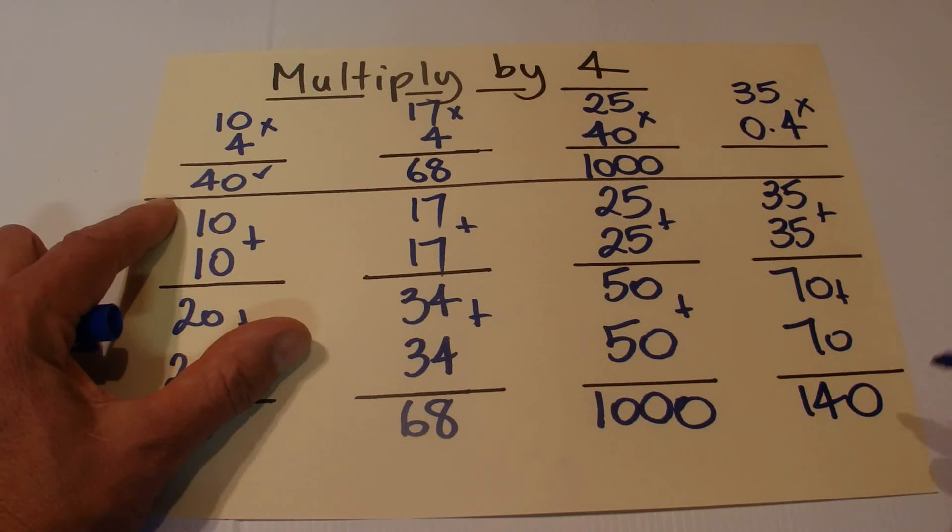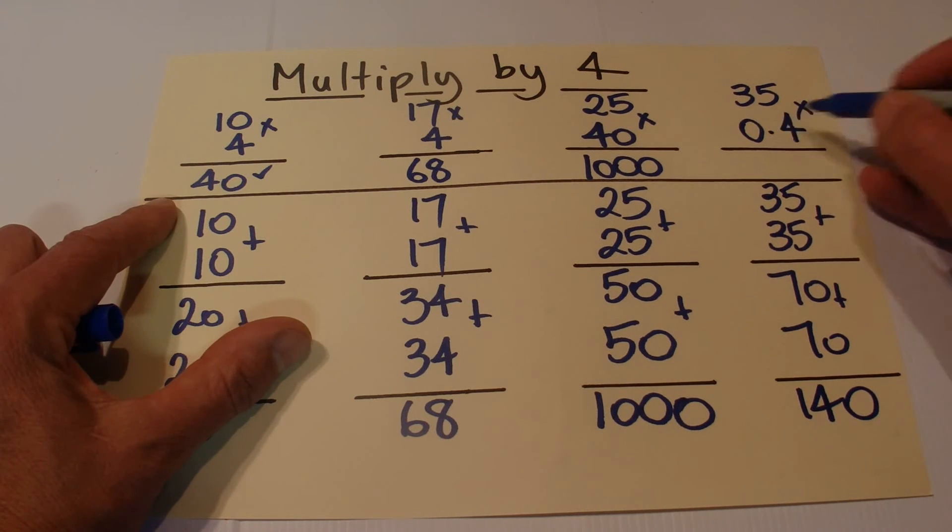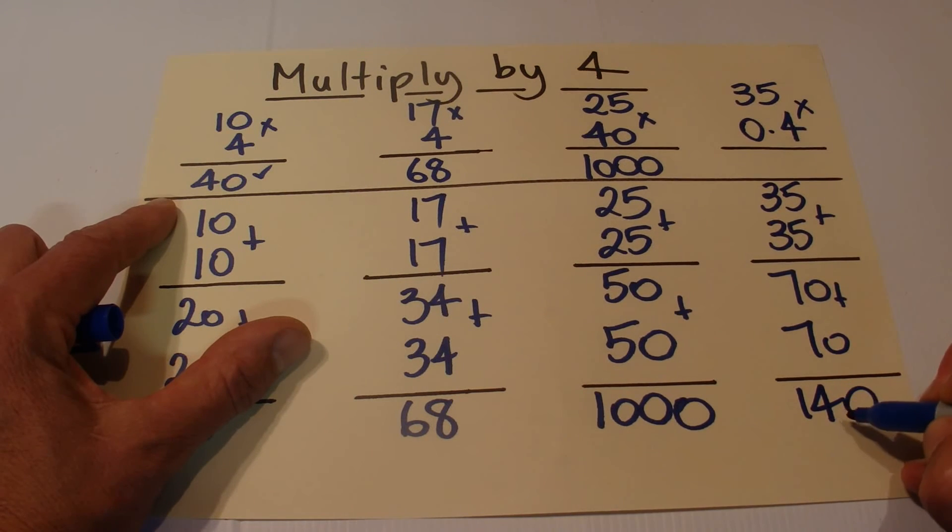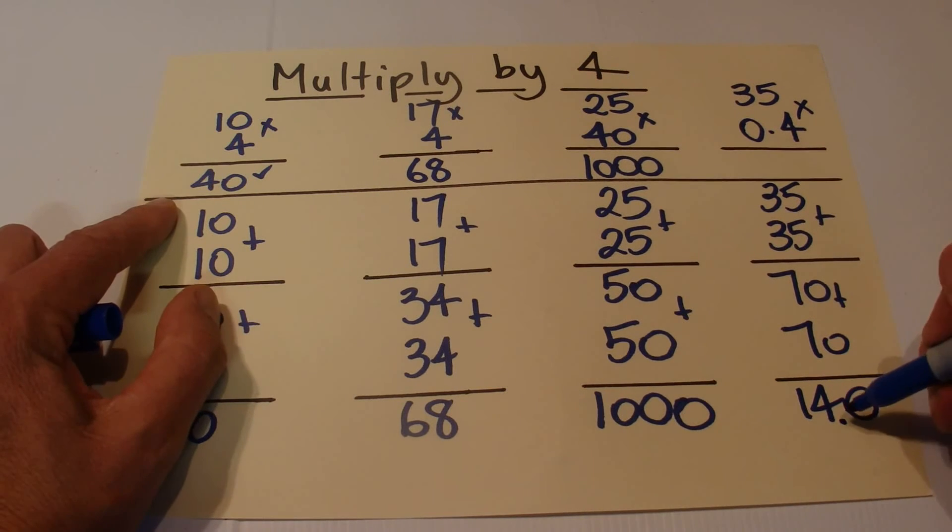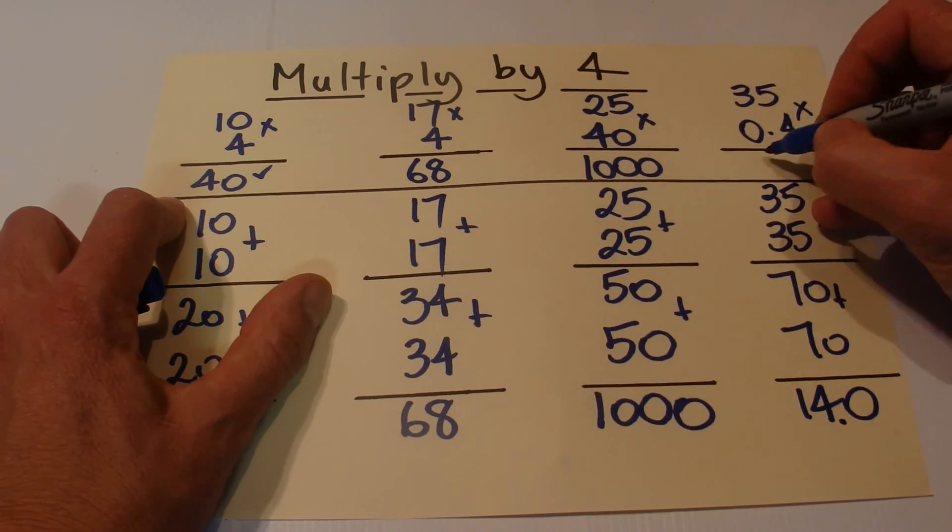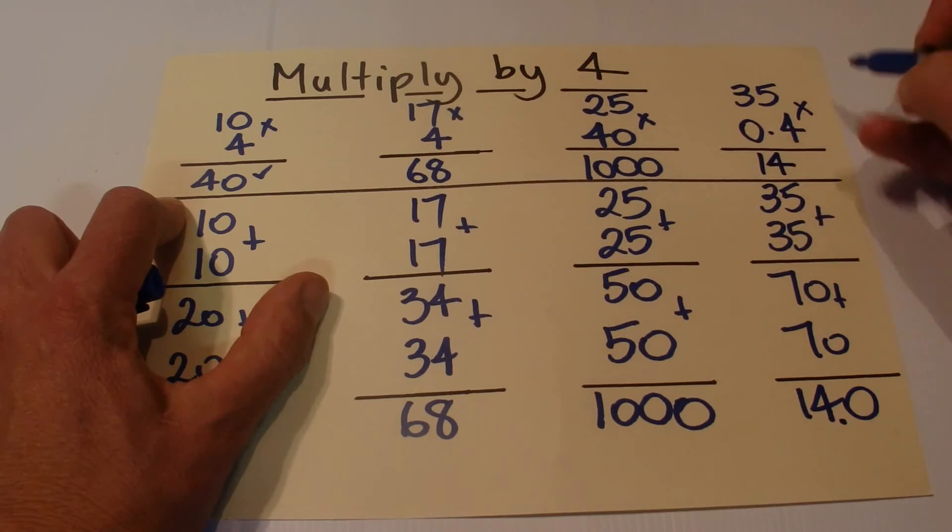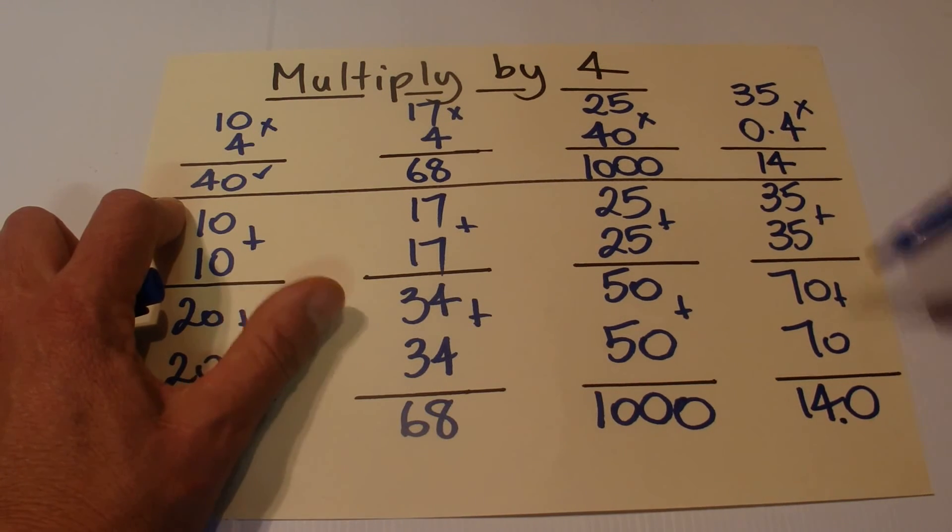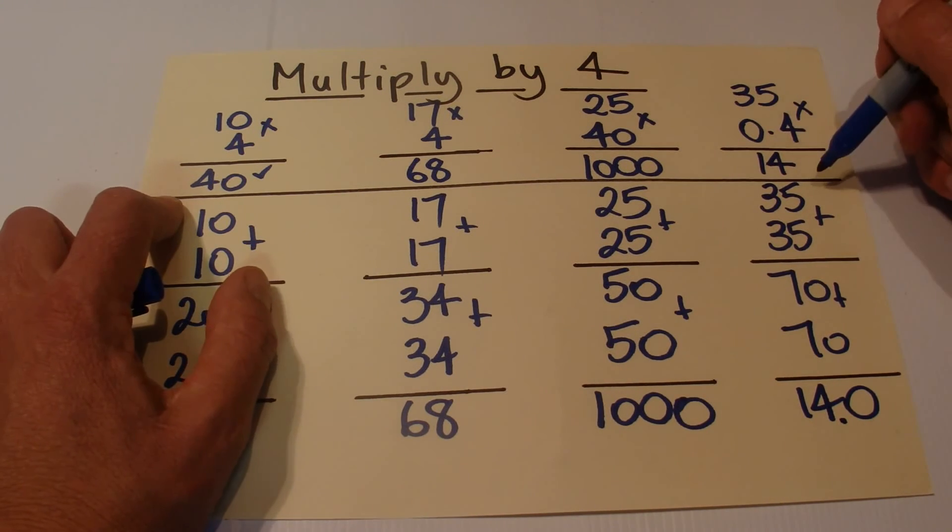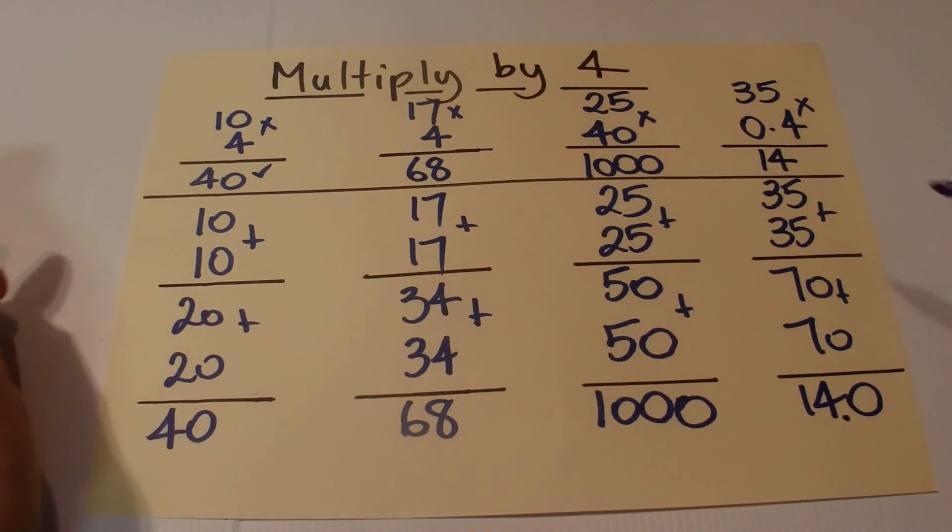But because we multiply by 0.4, we need to put that decimal place in one space from the right. And the answer is 14.0. So 35 times 0.4 is 14.